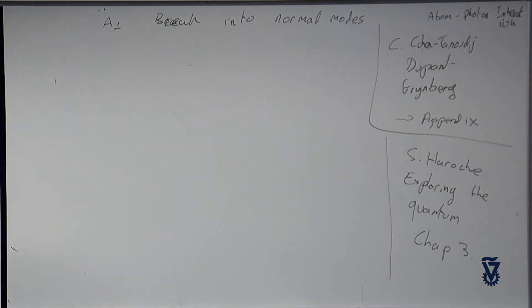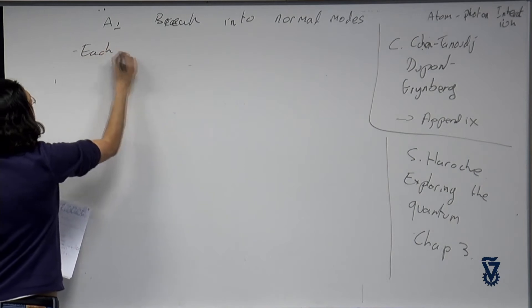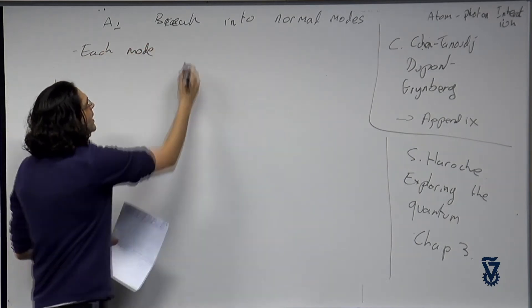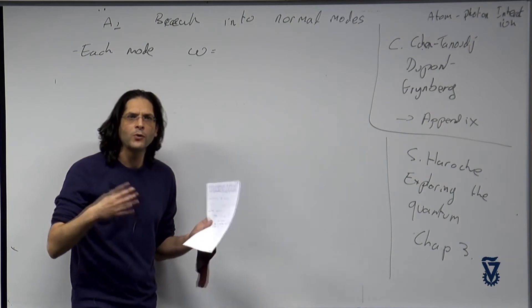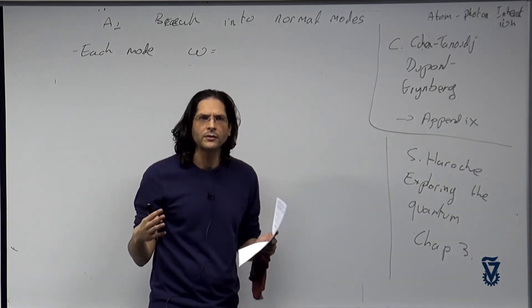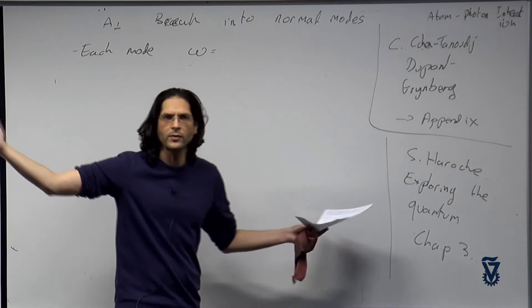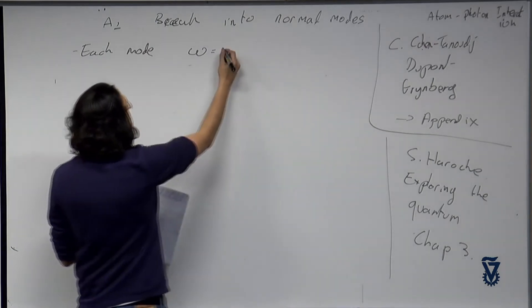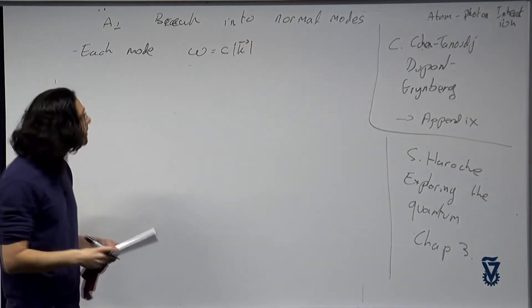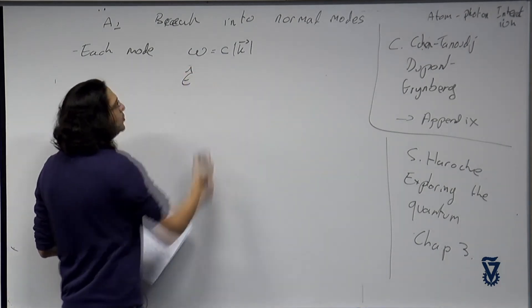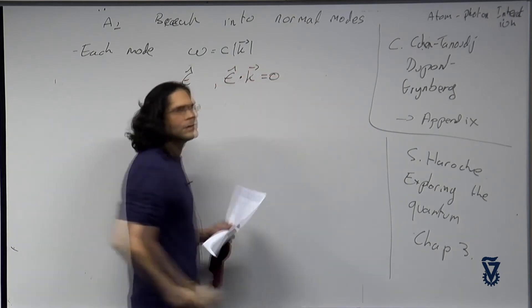The main point when we break this into normal modes is that each mode will have a certain frequency. We have the transverse components of our field — the electric field and the magnetic field — described by distinct frequencies, a spectrum of frequencies. In vacuum we have a continuum of frequencies connected to the k-vector through the speed of light, and they have two polarizations such that E · k = 0.